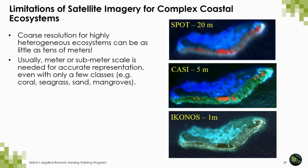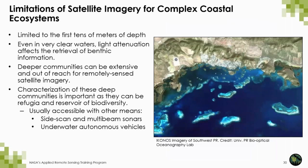Satellite imagery is also limited for coastal ecosystems to the first tens of meters of depth. Even in clear waters such as La Parguera Natural Reserve in Puerto Rico, you can use it only for very shallow systems. Once you go beyond 10 or 20 meters of depth, you can barely distinguish any features. This is why for deeper communities, other methods are used, such as side-scan or multi-beam sonars, or underwater autonomous vehicles with underwater photography to map mesophotic reefs below 50 or 60 meters of depth.